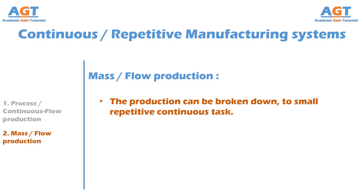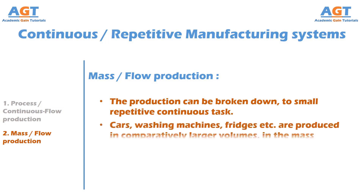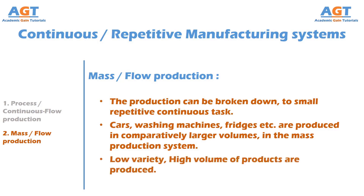It can be used when many identical or similar types of products are to be produced using machines and a semi-skilled workforce. The products are assembled as they flow along a production line. The operators tend to be semi-skilled. Cheaper identical products such as cars, washing machines, and fridges are produced in comparatively larger volumes in the mass production system.